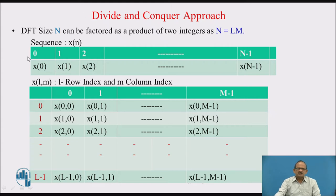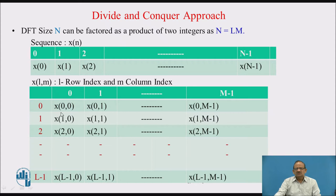Consider a sequence x(n) of length N. In a two-dimensional array, we represent it as x(l, m), where l is the row index and m is the column index. There are rows from 0 to L−1, so L number of rows, and 0 to M−1, so M number of columns. The element x(0,0), x(0,1) and so on — the total number of elements will be L rows and M columns, giving LM elements, which equals N.